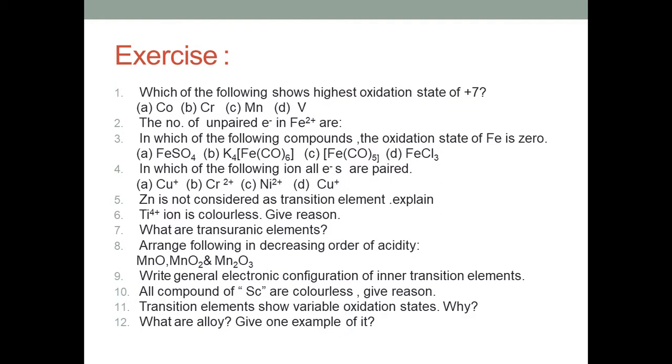Question number four: which of the following ions has all electrons paired? You have to write the configuration for each one and find out. Question number five: Zinc is not considered as a transition element, explain. Because it does not have any unpaired electron in its ground state as well as in other oxidation states. Zinc is completely devoid of unpaired electrons. If there is no unpaired electron, then we don't call it a transition element.